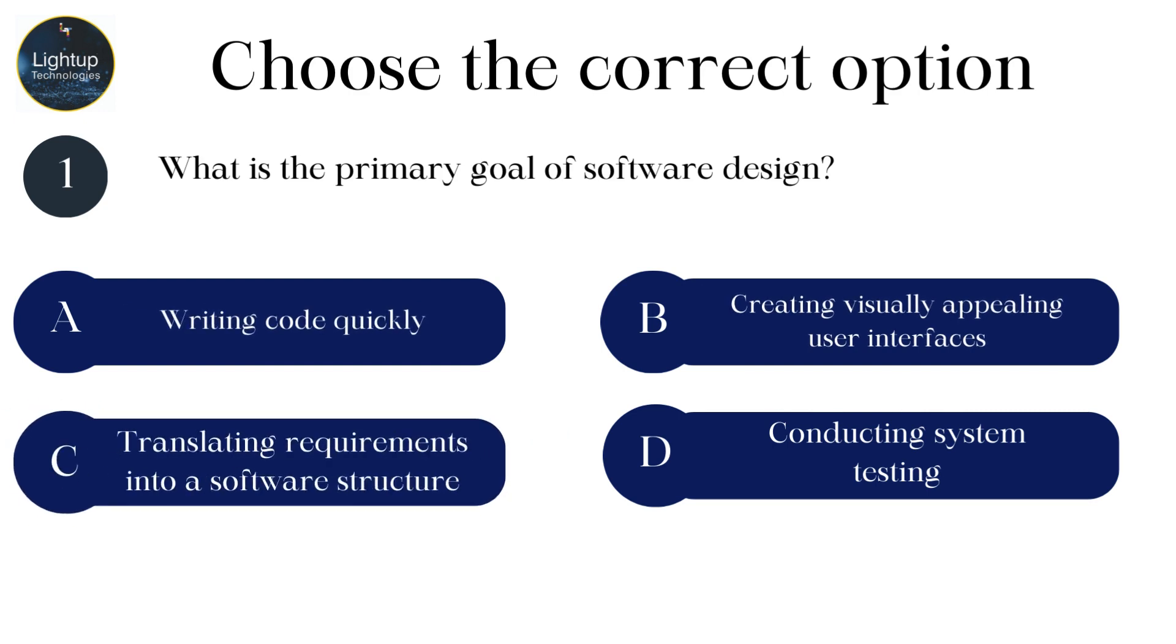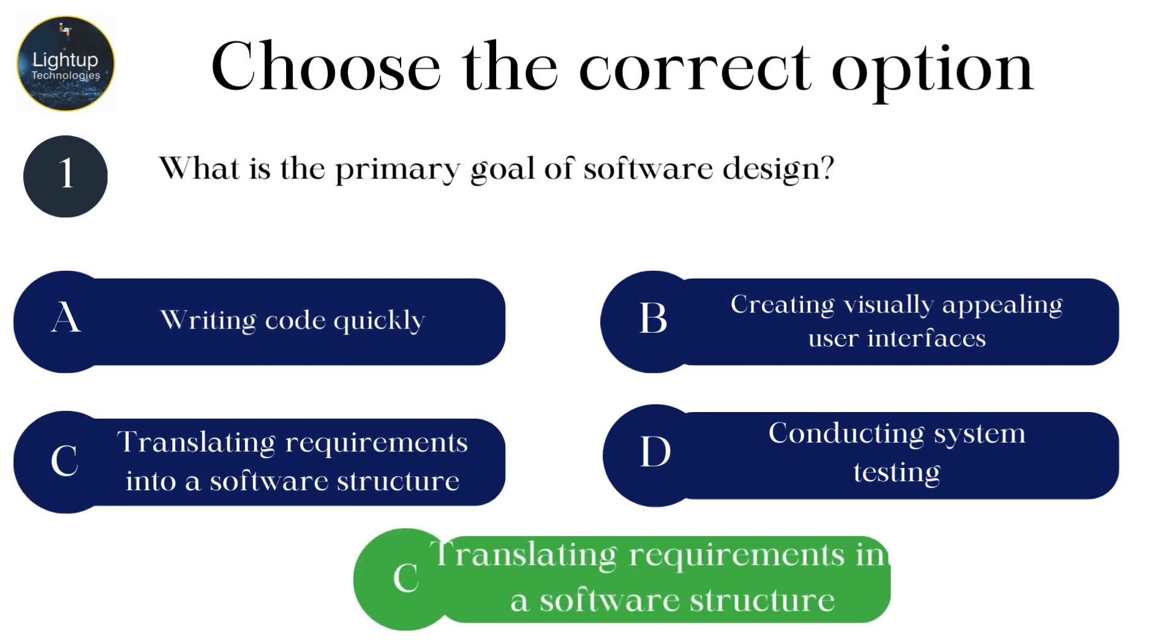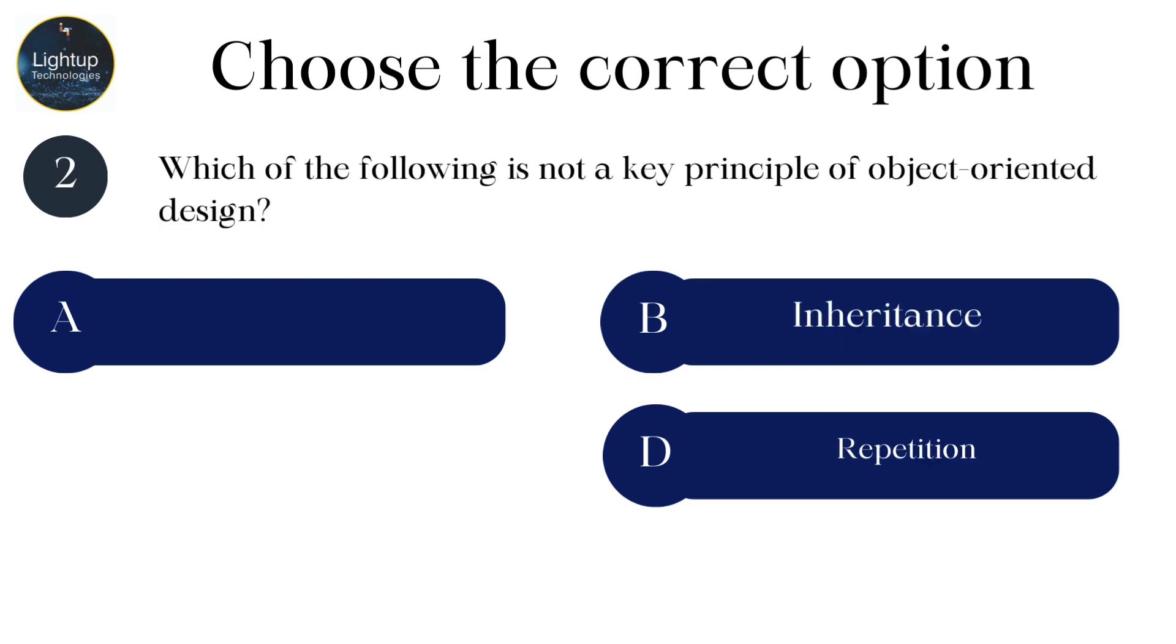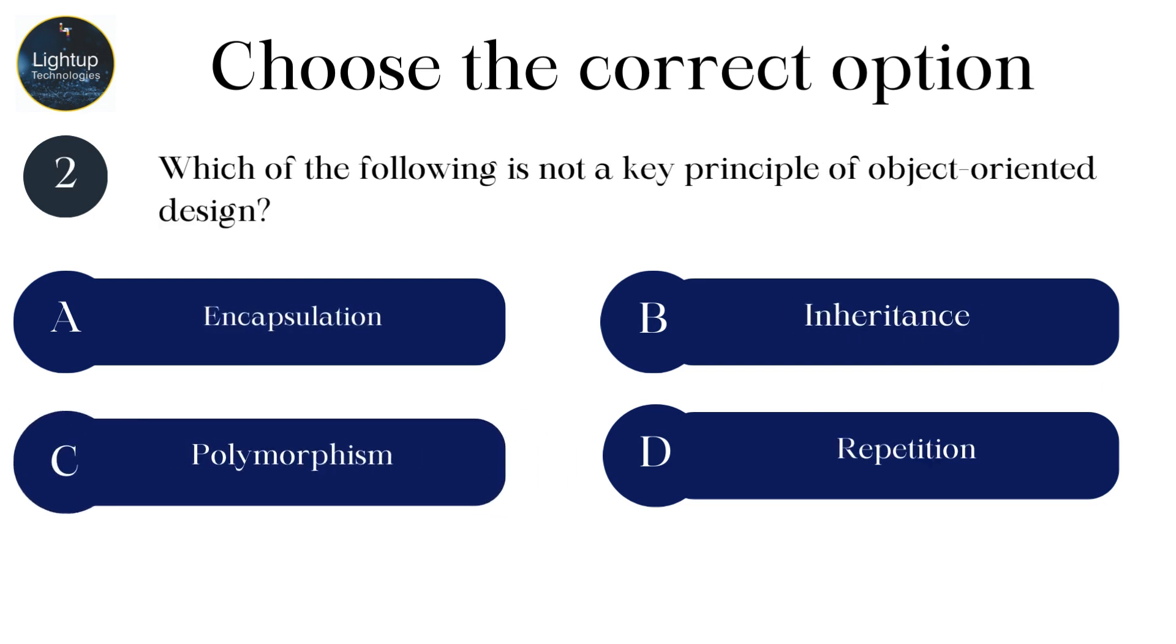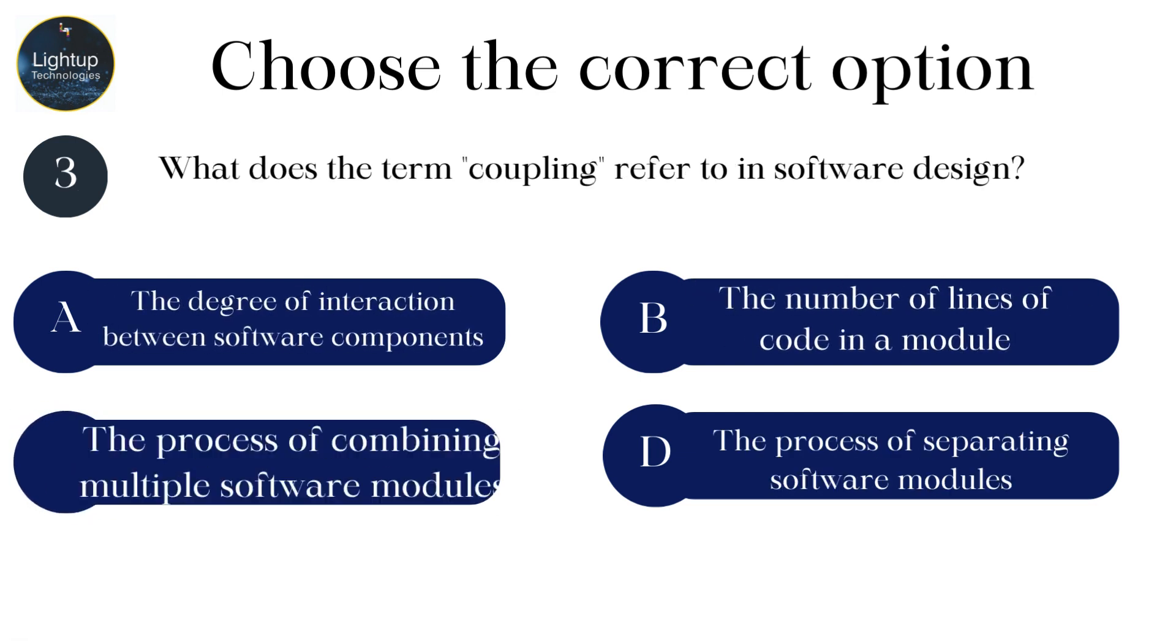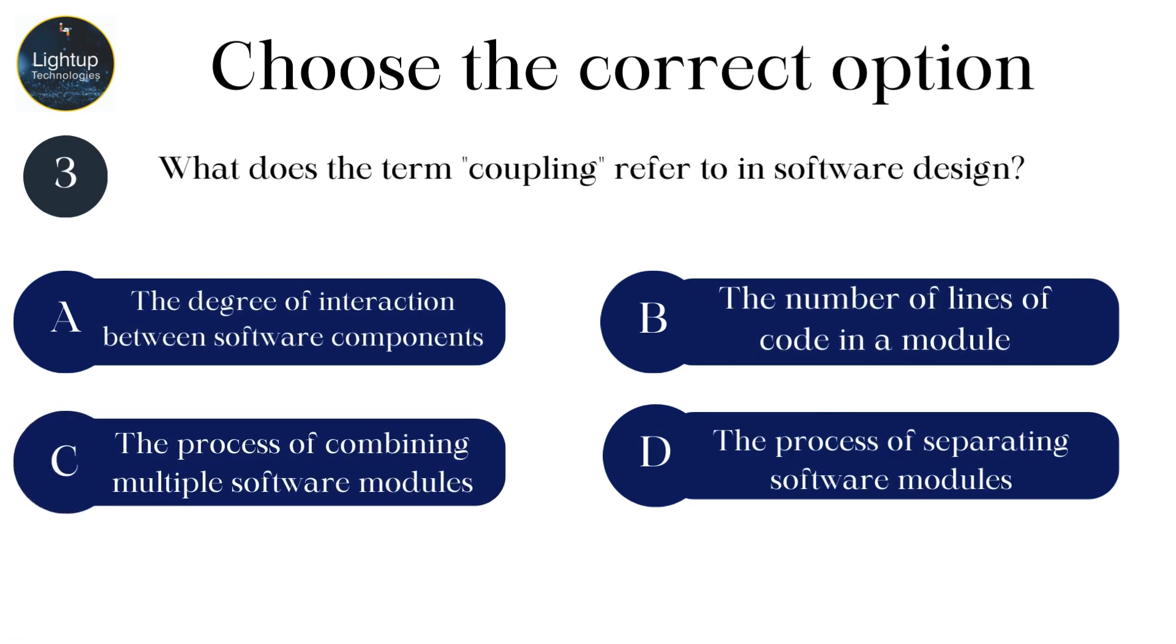What is the primary goal of software design? Which of the following is not a key principle of object-oriented design? What does the term coupling refer to in software design?